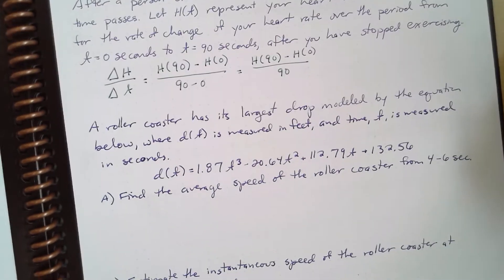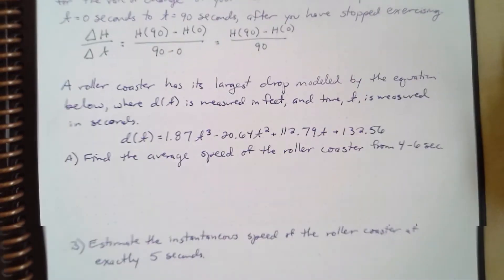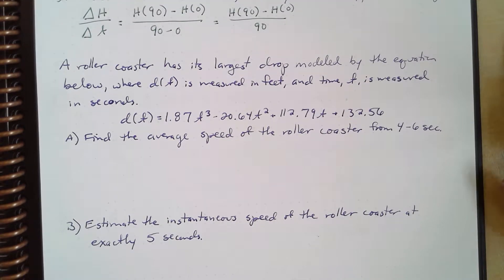Let's talk about another example. A roller coaster has its largest drop modeled by the equation below, where d(t) is measured in feet and time t is measured in seconds. d(t) equals 1.87t³ minus 20.64t² plus 112.79t plus 132.56.